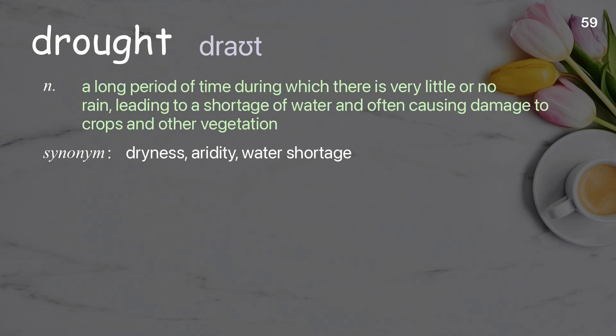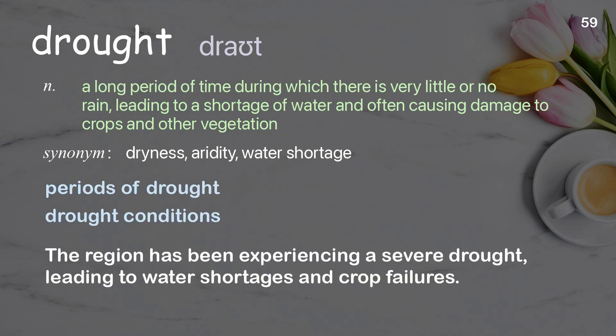Drought: a long period of time during which there is very little or no rain, leading to a shortage of water and often causing damage to crops and other vegetation. Examples: periods of drought; drought conditions. The region has been experiencing a severe drought, leading to water shortages and crop failures.